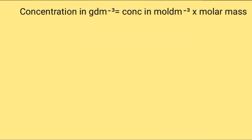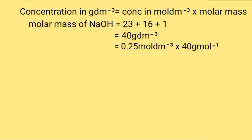Concentration of sodium hydroxide in moles per dm³ times molar mass. Molar mass of sodium hydroxide is 23 plus 16 plus 1 equals 40 grams per mol. Hence, concentration in grams per dm³ will be 0.25 moles per dm³ times 40 grams per mol, which gives us 10 grams per dm³.